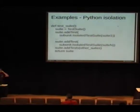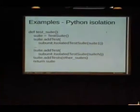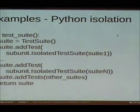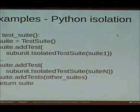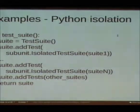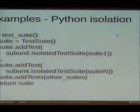This is the decorator I was talking about. Essentially it says: you've got a normal test suite function — an idiom in Python — and this function creates a test suite, adds to it from the subunit library the isolated test suite object, and suites 1 through N are simply suites you get from elsewhere using the existing loader facility.